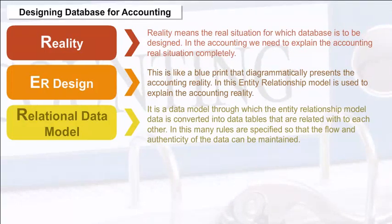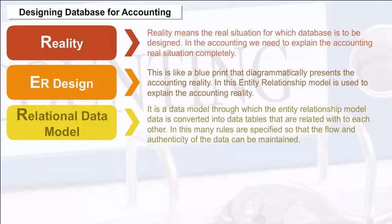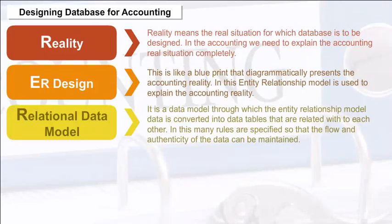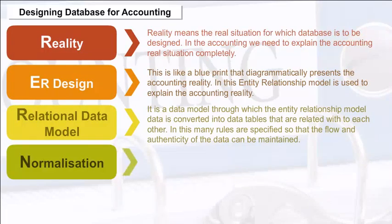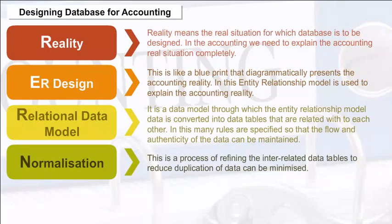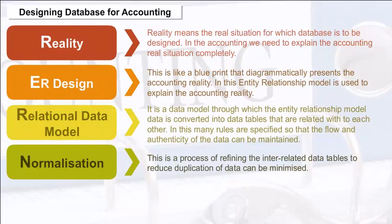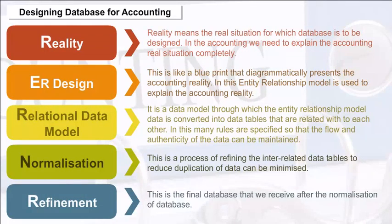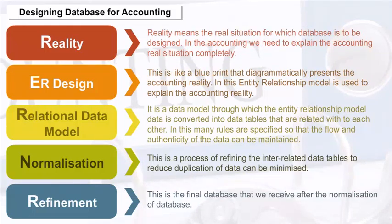Relational Data Model — it is a data model through which the entity relationship model data is converted into data tables that are related with each other. Many rules are specified so that the flow and authenticity of the data can be maintained. Normalization — this is a process of refining the interrelated data tables to reduce duplication of data. Refinement — this is the final database received after normalization.